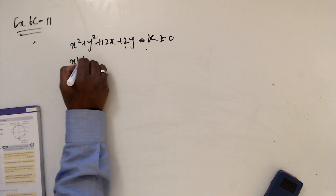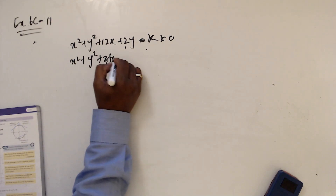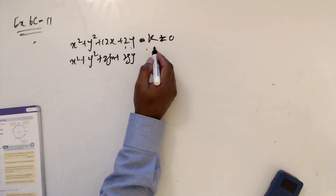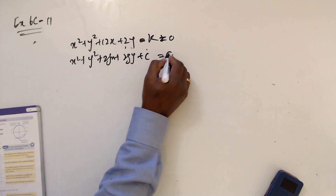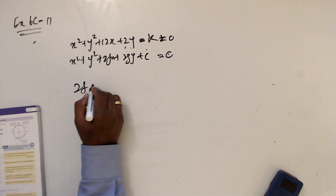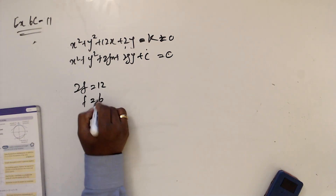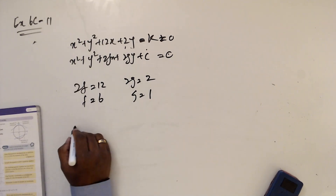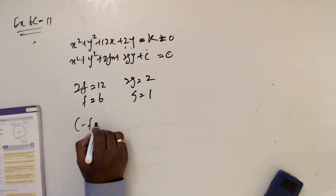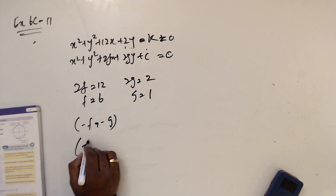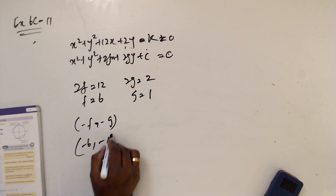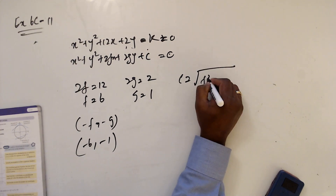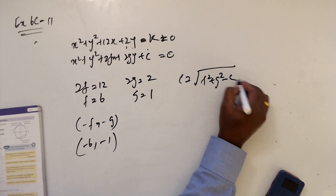Working through again: x squared plus y squared plus 2fx plus 2gy plus c equals 0. Bringing k to the other side: 2f equals 12 so f equals 6; 2g equals 2 so g equals 1. The center is minus f, minus g, which is minus 6 and minus 1.